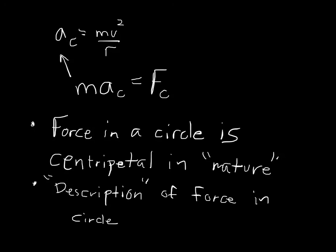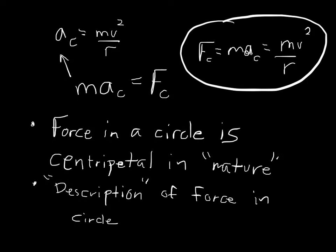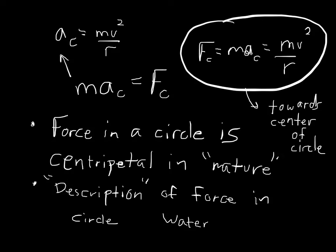The equation for centripetal force: F_c = m·a_c = m·V²/r. The direction is towards the center of the circle, because that's the direction of centripetal acceleration. We'll discuss the example of the water bucket as a visual example.